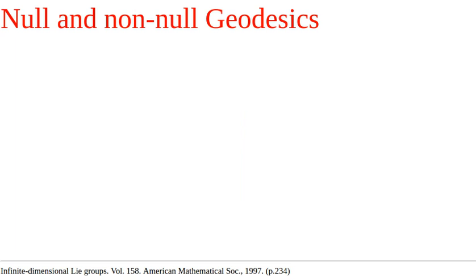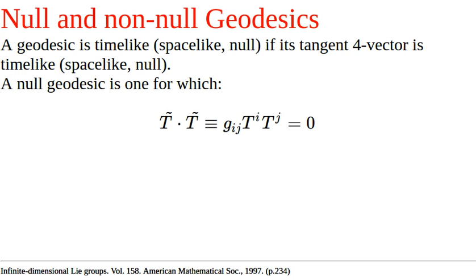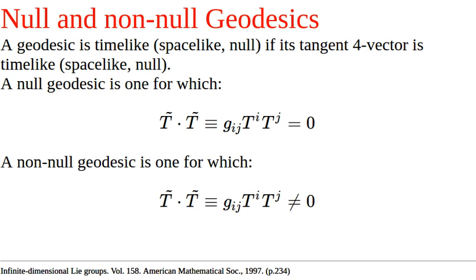Geodesics, like four vectors, can be classified as time-like, space-like, or null. The general rule is that a geodesic is time-like if its tangent four vector is time-like, and analogous for space-like and null geodesics. In other words, a null geodesic is one for which this dot product is zero, and a non-null geodesic is one for which it is not zero.